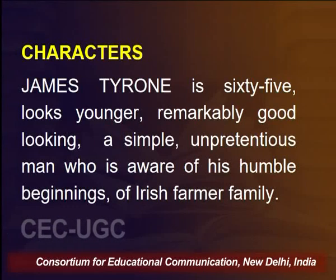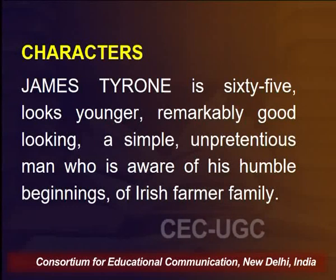Let us look at the characters in the play. James Tyrone, who is basically the father, is 65 years old, looks younger, remarkably good-looking — a simple, unpretentious man who is aware of his humble beginnings from an Irish farmer family. He had to work hard at the age of ten to make money for the family. His mother scrubbed dishes at somebody's house and they never had a full meal. He is a very sturdy man who has never been really sick a day in his life and has no nerves.